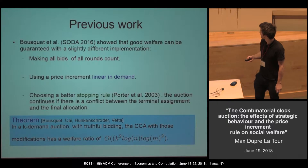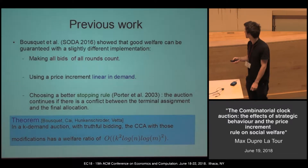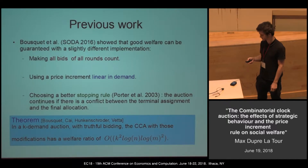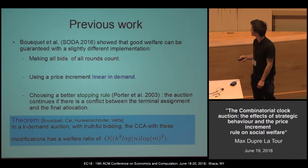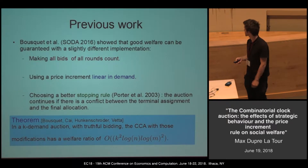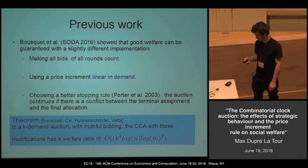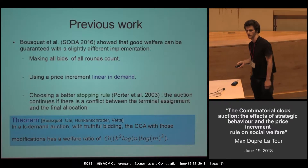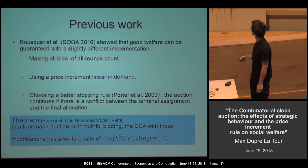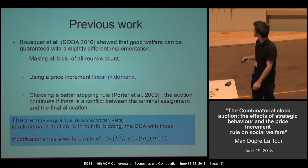With those three conditions, we have a nice result in a k-demand auction — meaning bidders want bundles of size at most k. With truthful bidding, we have a welfare ratio of at most k² log n log m². This is a good ratio because it is polynomial in log n and log m, but for some reason it is not completely satisfying.